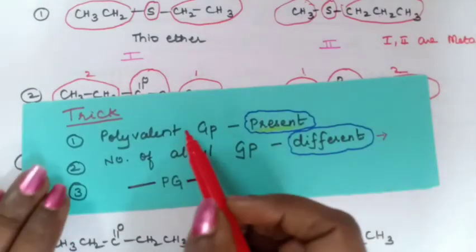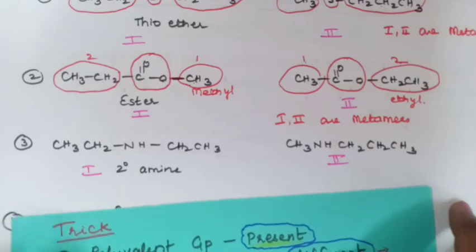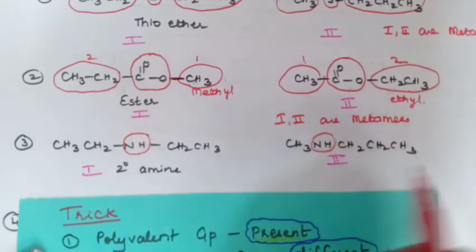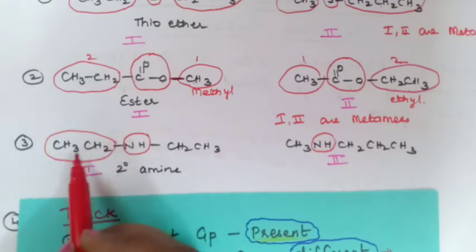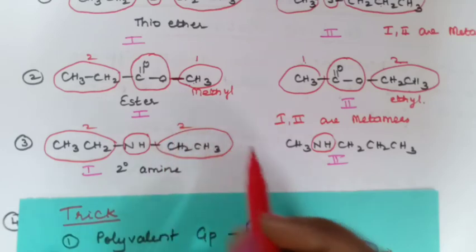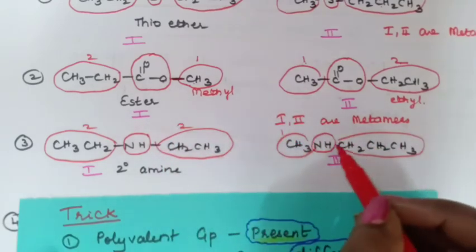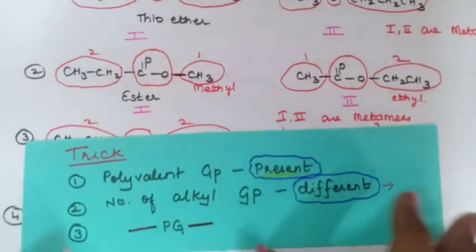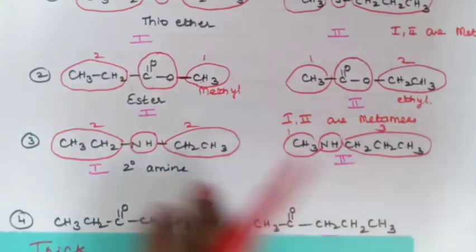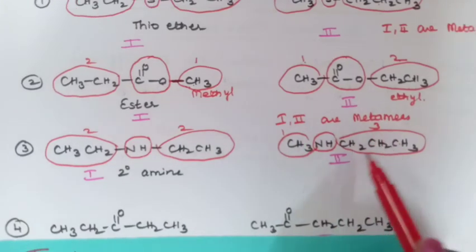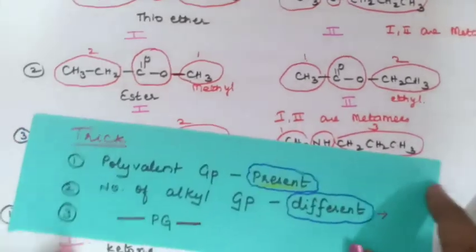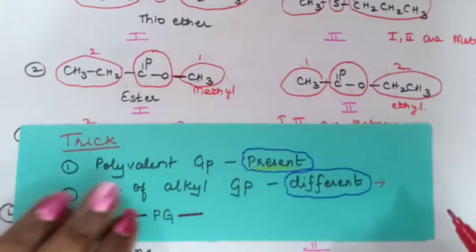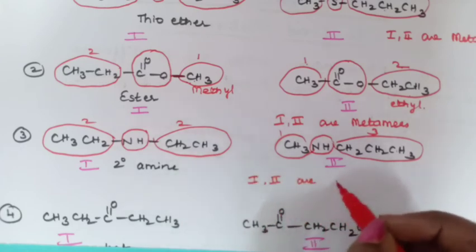Next is the third example. Identify the polyvalent functional group: NH is present in both molecules. Count the alkyl groups on both sides. In the first molecule: 2 carbons and 2 carbons. In the second molecule: 1 carbon and 3 carbons. Since 2 and 2 versus 1 and 3 are different, the alkyl group numbers differ at the second step itself — there is no need to check the third point. Molecules 1 and 2 are metamers.